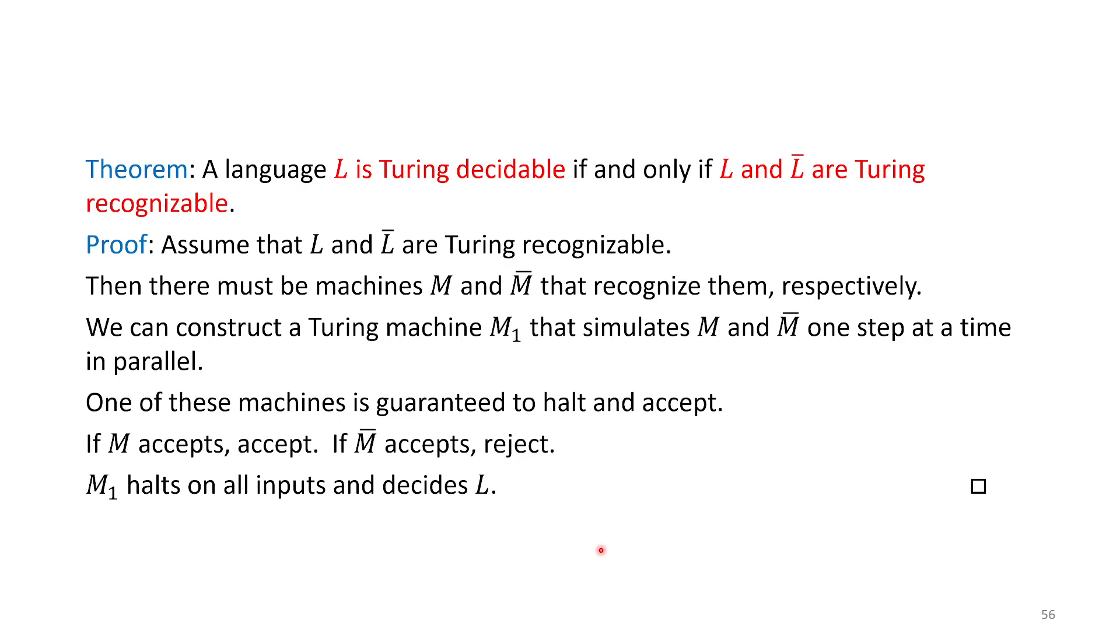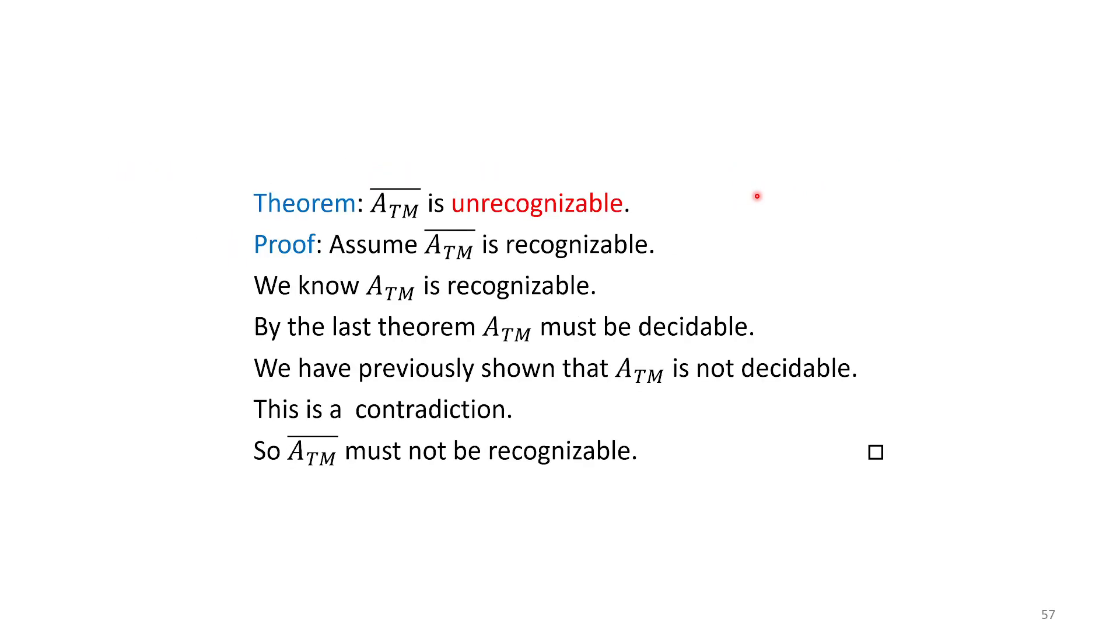Why is this theorem helpful? What it also means is if a language is not decidable, then it can't be the case that both L and L̄ are recognizable. One of them must be unrecognizable. Let's take that further. We have this language ATM. Let's take a variant, ATM̄, the complement of ATM. This language is unrecognizable.